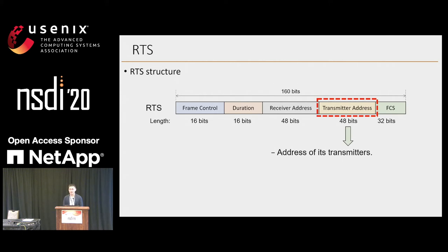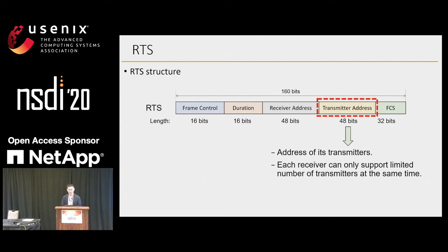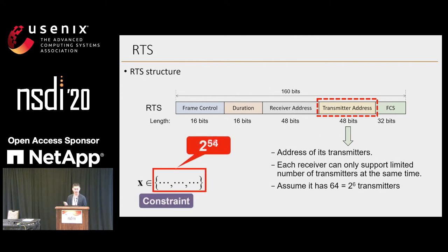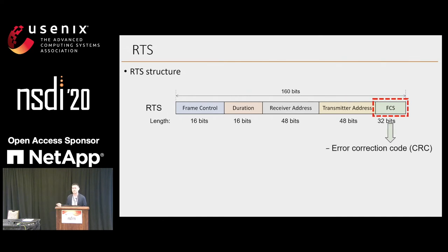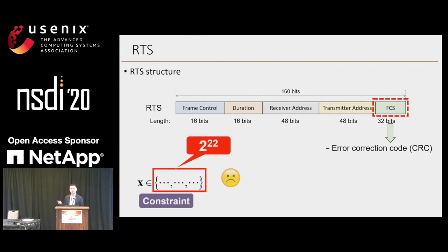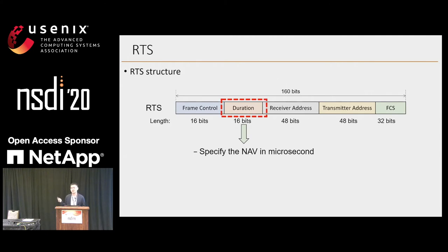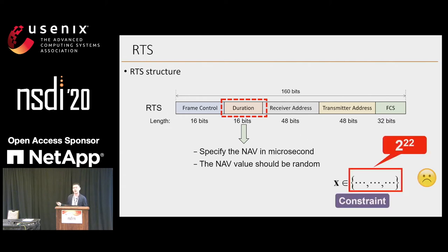For the transmitter address, right now for each AP it can only support a limited number of transmitters at the same time. We assume it has 2 to the power of 6 transmitters, so the size becomes 2 to the power of 54. For the last field, it's for error correction, so it is not random, and the size keeps decreasing to 2 to the power of 22. For the duration field, it specifies the NAV values in microseconds — the length of the following data package — so this one is supposed to be random, and the size remains 2 to the power of 22.